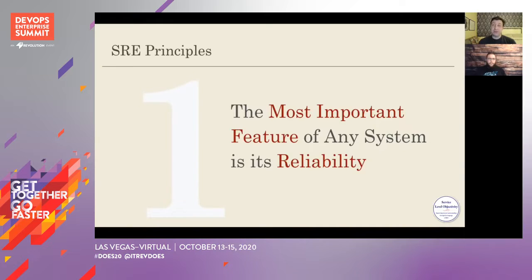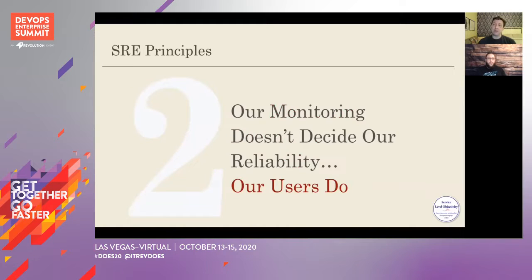Which brings us to SRE principle number two: our monitoring doesn't decide our reliability — our users do. It's easy to get signals, but not always easy to get signals that matter. I've often been woken up in the middle of the night by an alert. An operator says, "Hey, the CPU usage is spiking — it's really high on all of the servers." And I groggily go to my web browser and say, "The website looks fine." So the person on the other end says, "What do you want me to do about it?" And I say, "I don't know, I'm going back to bed. Let's talk about it in the morning." This was a metric, a signal that really didn't matter to our users.